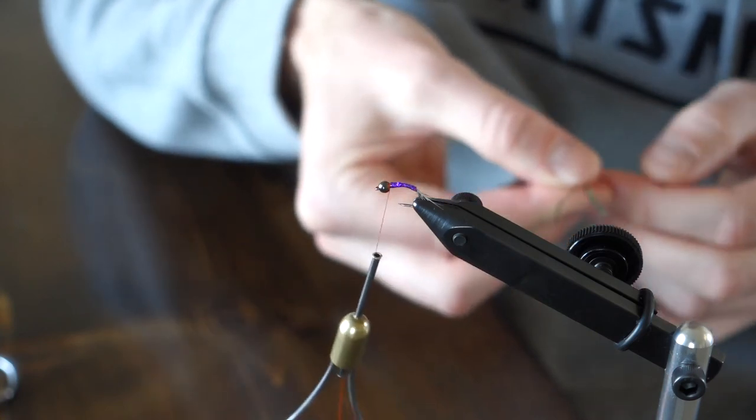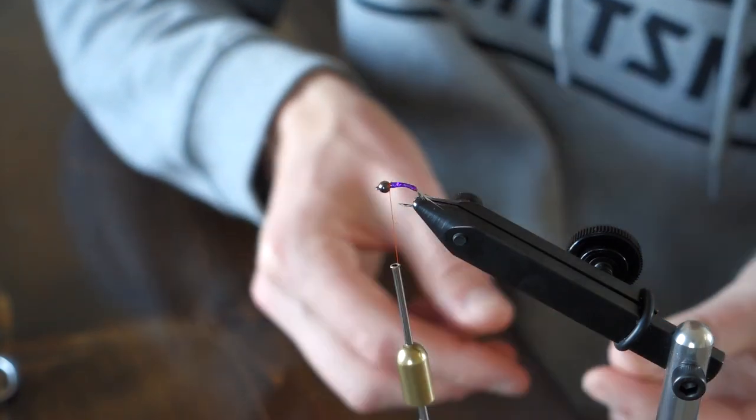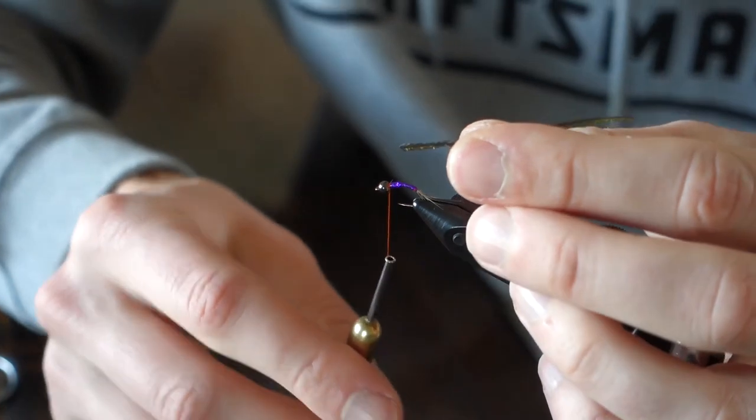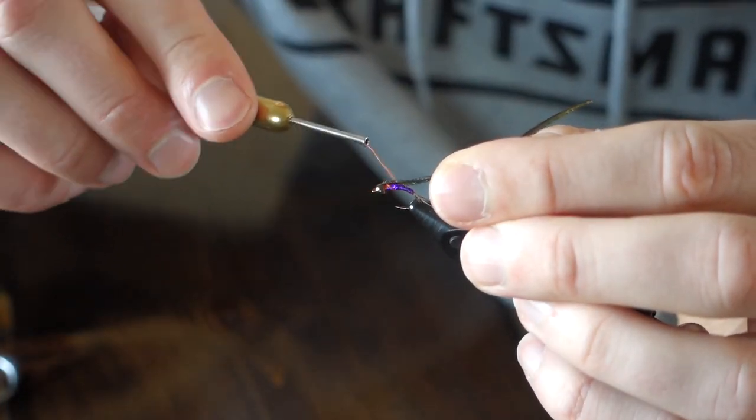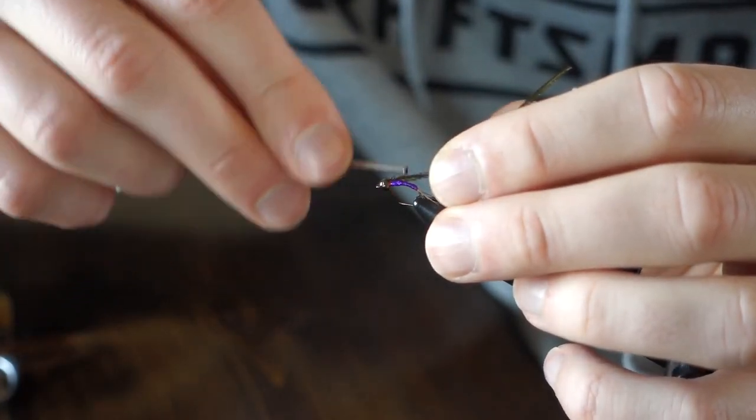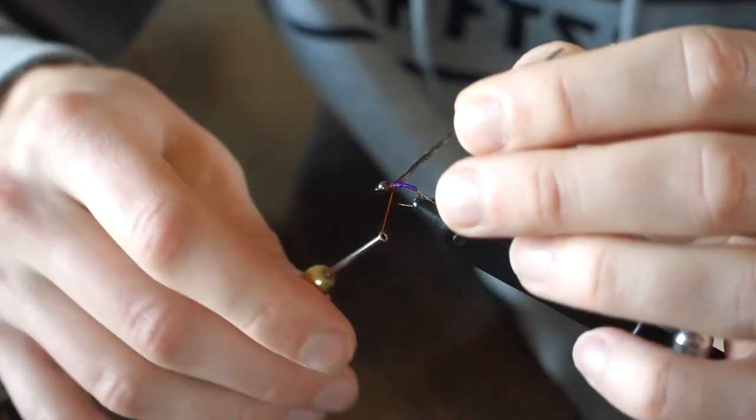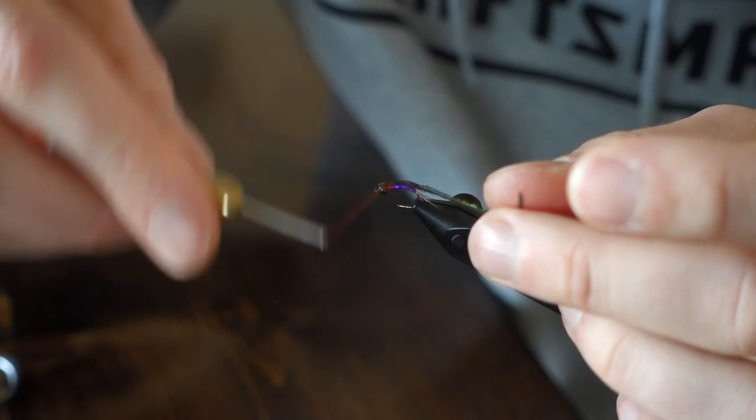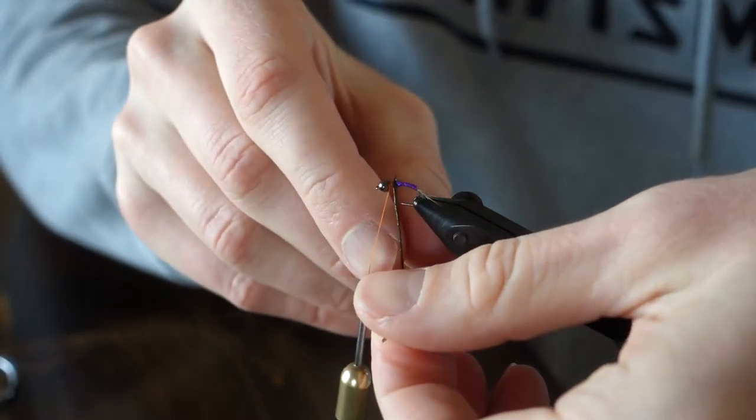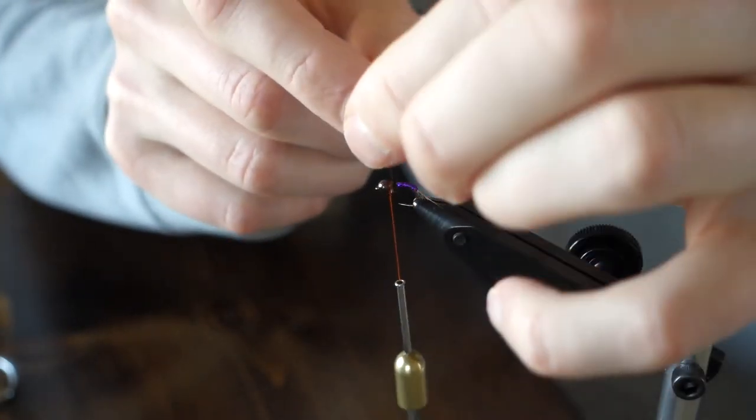And now I'm going to take two pieces of peacock herl. I'm going to wrap this peacock herl back about an eighth of an inch and wrap that towards the front to build our thorax.